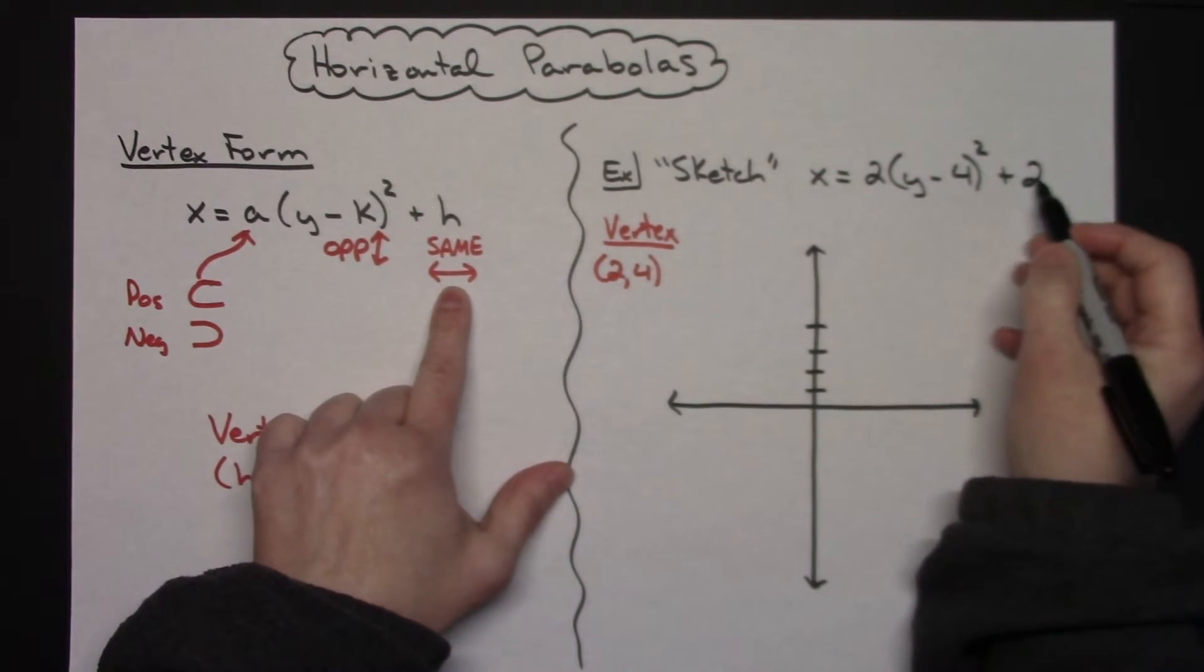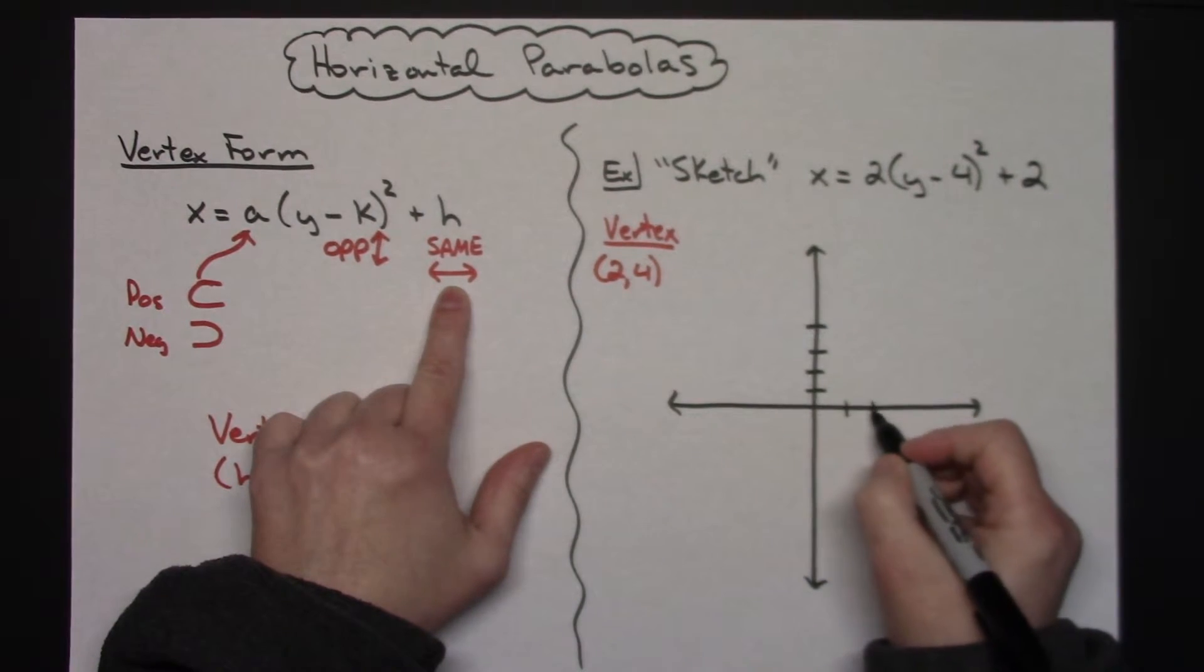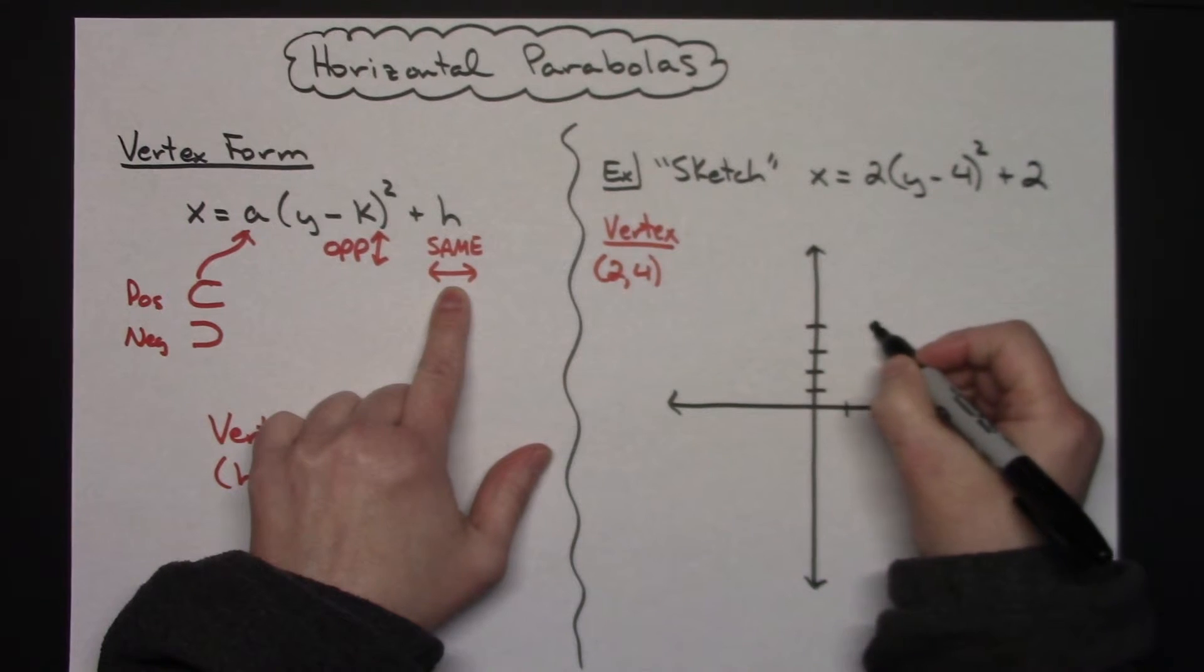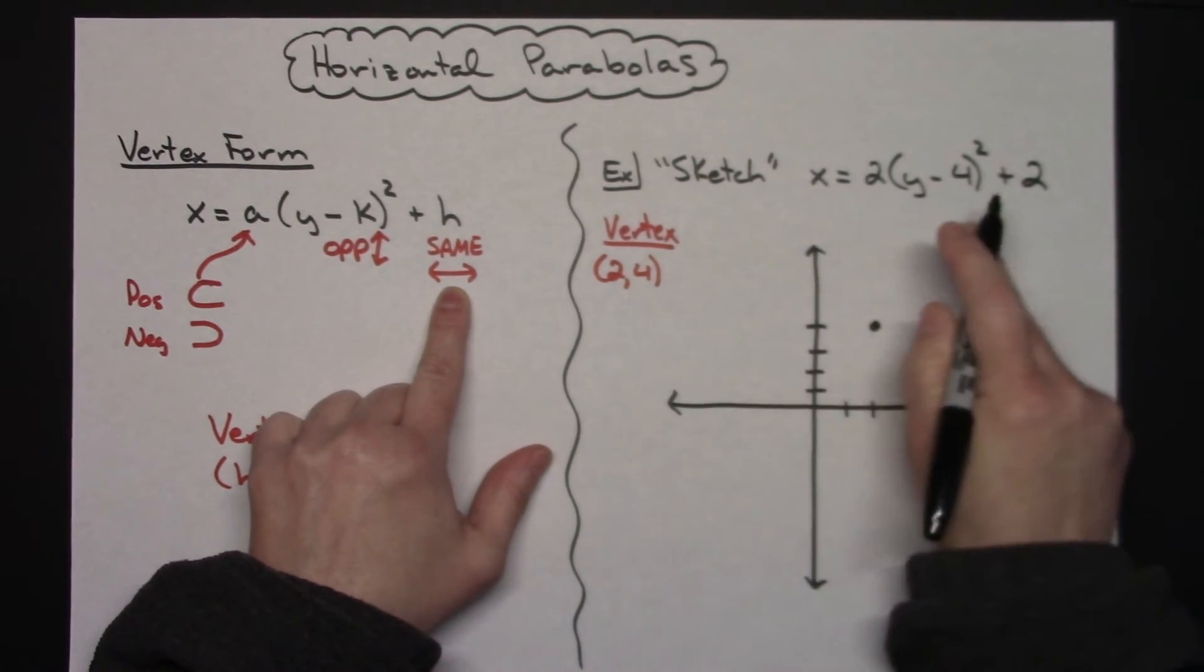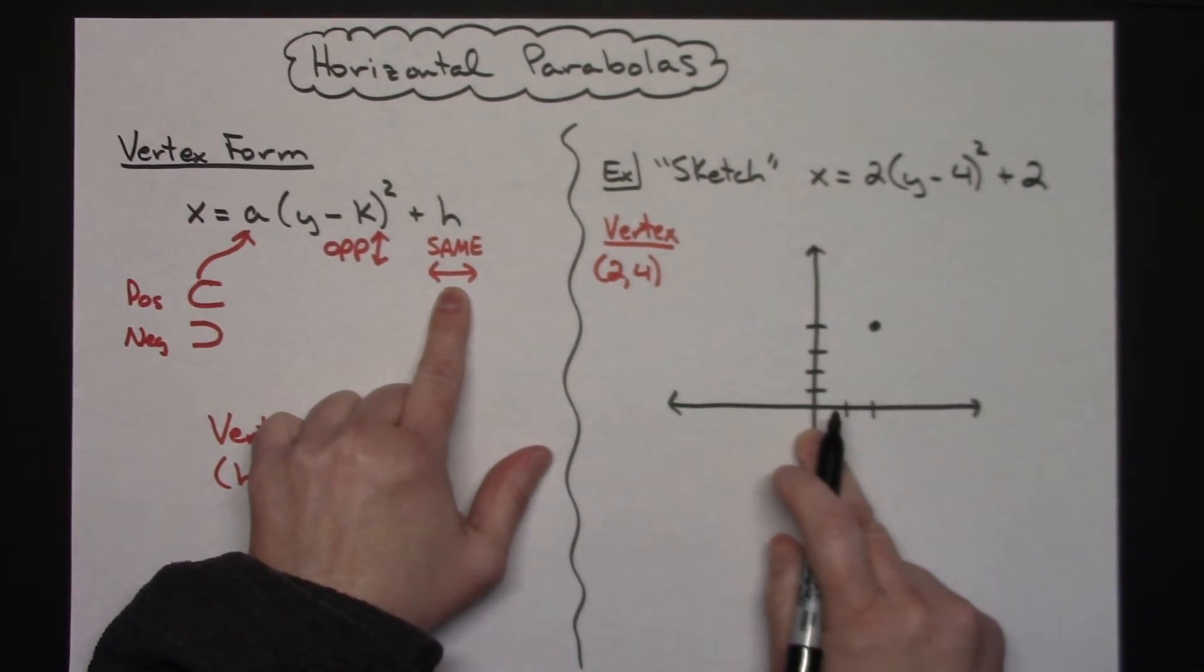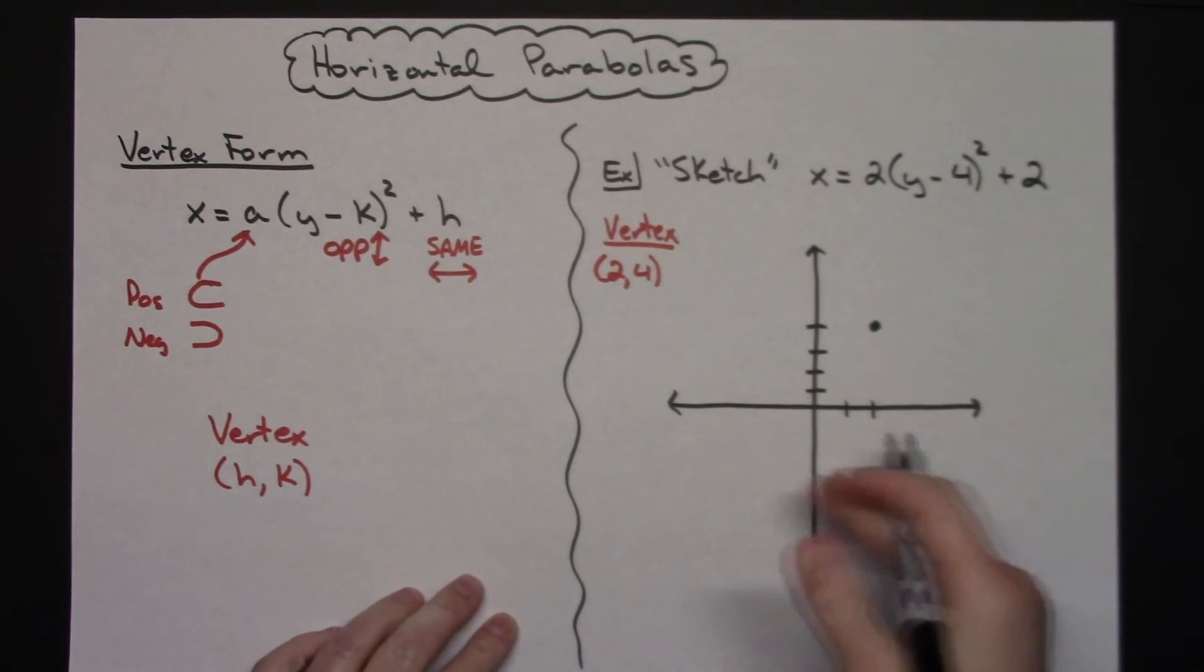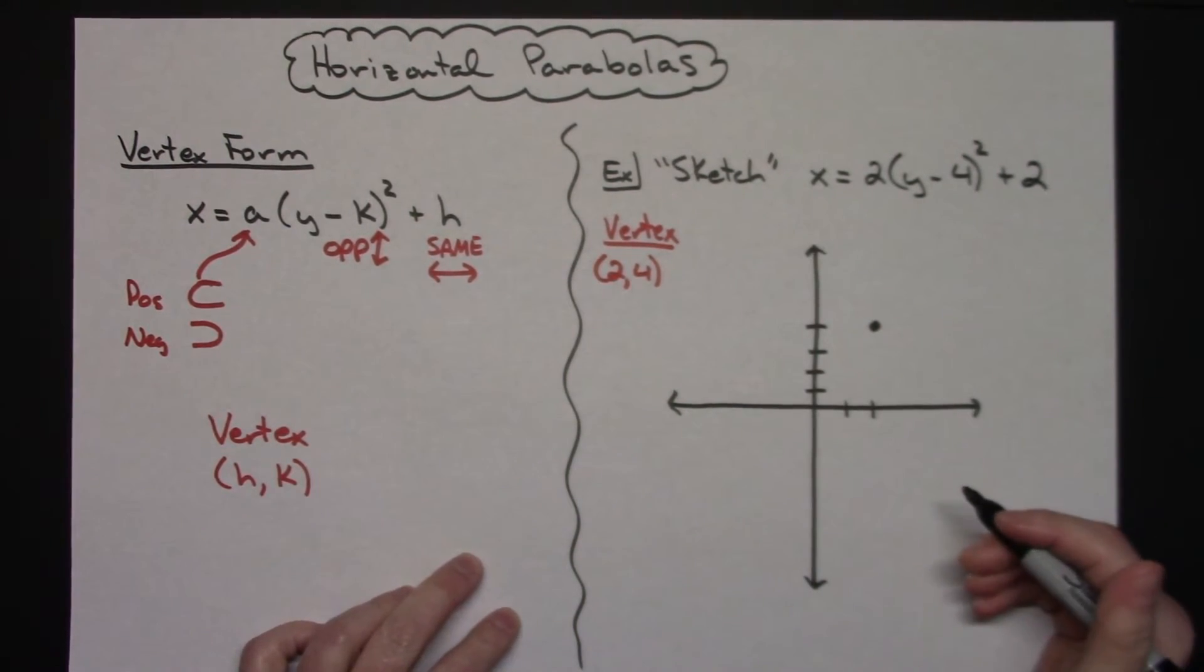And then this value out here would tell me how to shift left or right, so same 2. So then I would be going to the right 2, and then there would be my vertex. But again, if you pull the vertex out separately, it still puts me at 2, 4 for the vertex. So it really doesn't matter whether you do it shifting wise or you pull that vertex out.